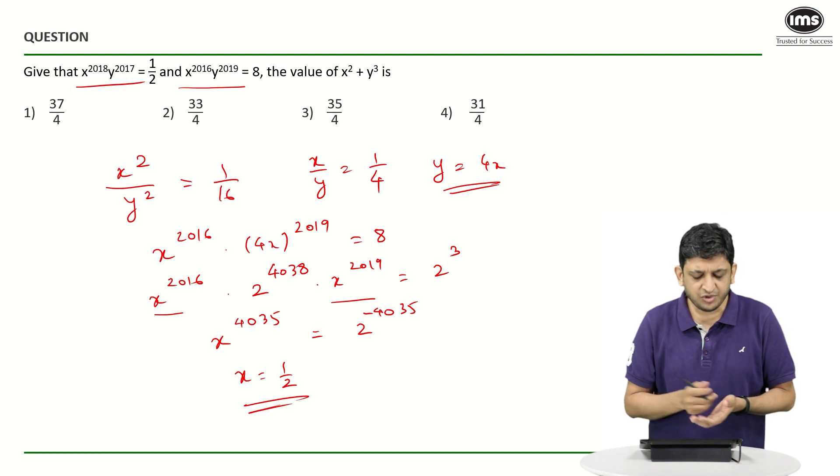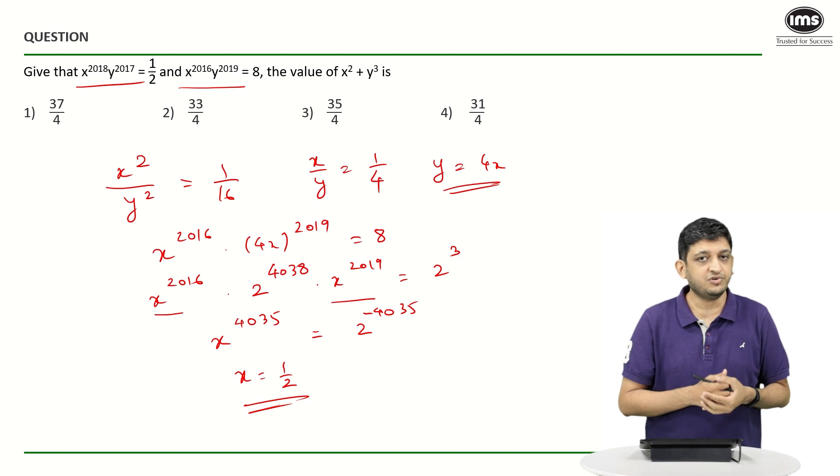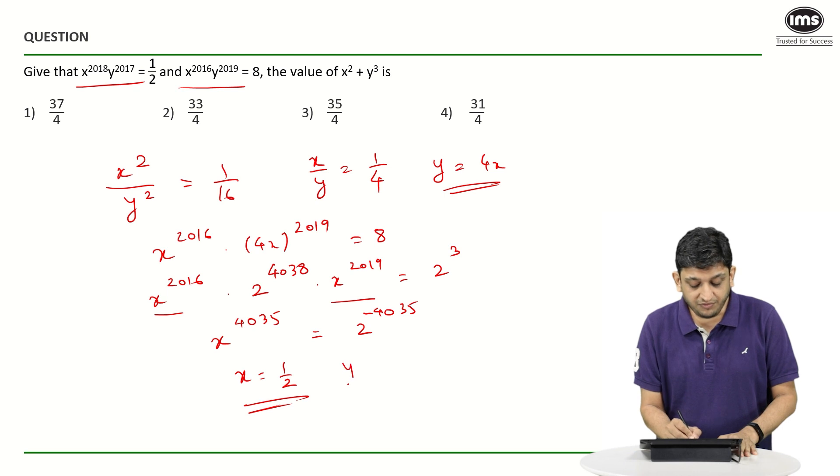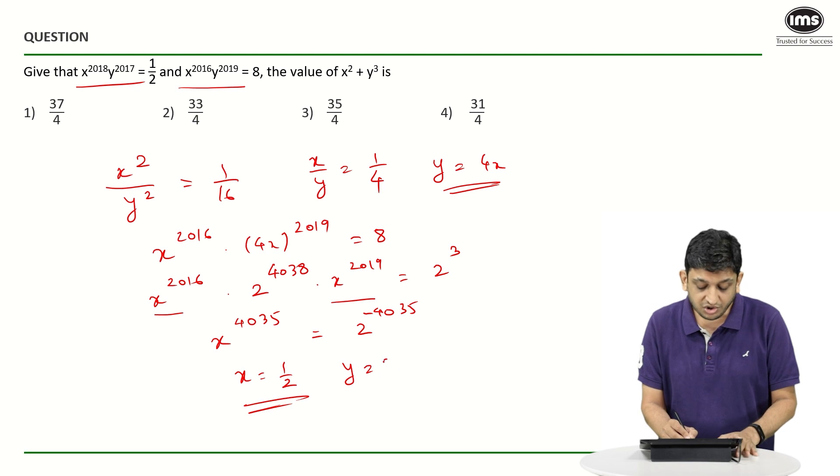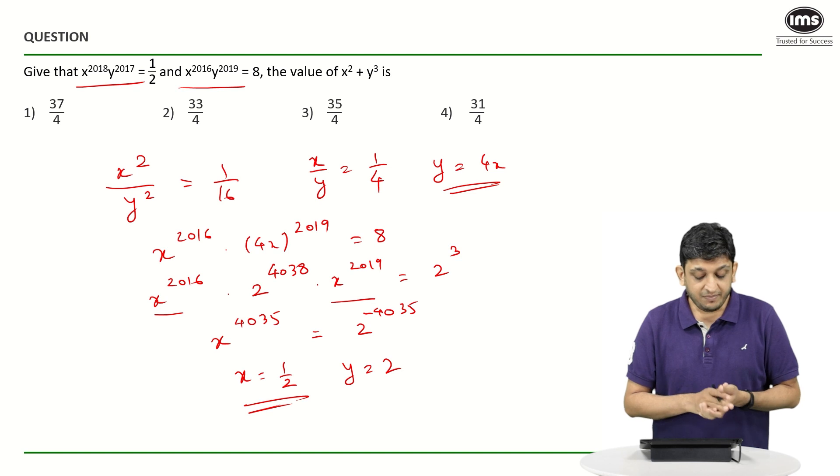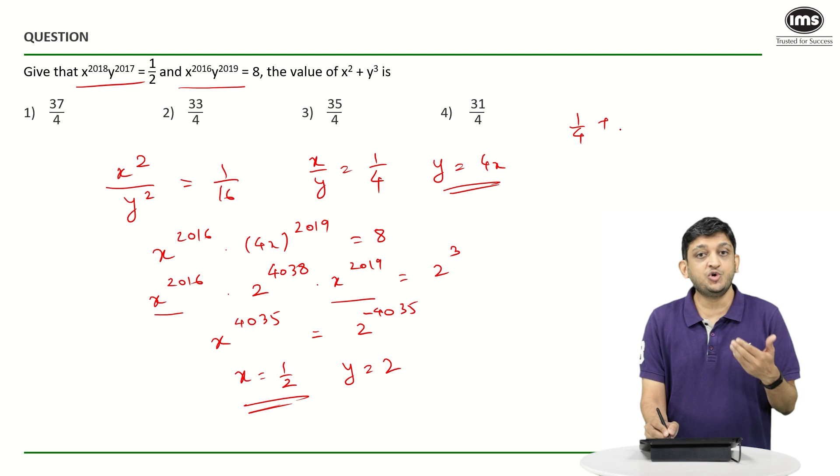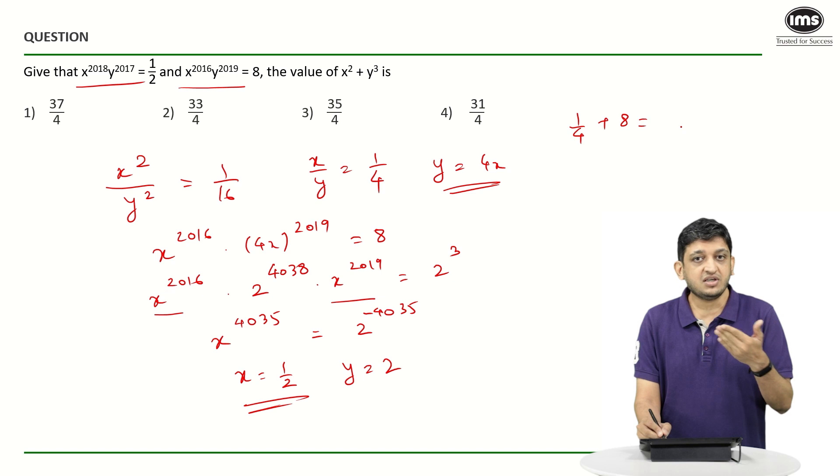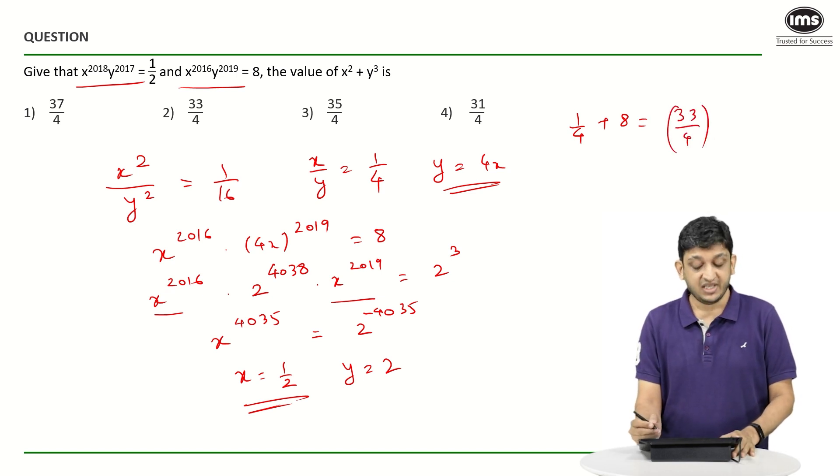Now I got the value of X as 1 by 2. Y is equal to 4X, so the value of Y becomes 4 times half, or 2. We have to find what is the value of X square plus Y cube. X square plus Y cube will be square of 1 by 2, that is 1 by 4, plus Y cubed, that is 2 cube or 8. The total is going to be 1 by 4 plus 8, or 32 plus 1 divided by 4, which will give us 33 by 4 as our answer. So the correct answer here is option 2.